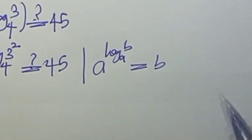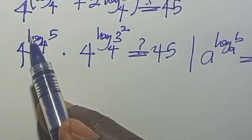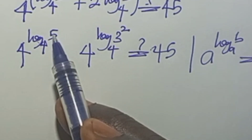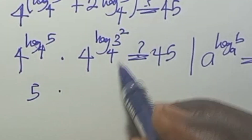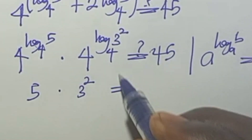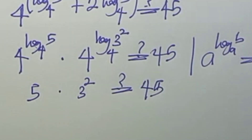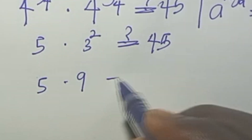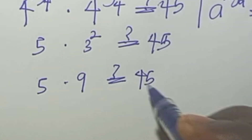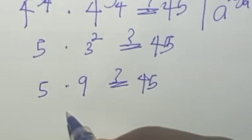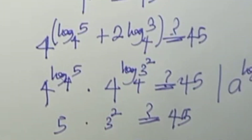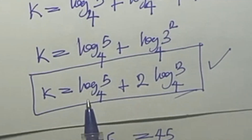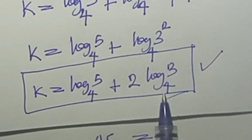Using the identity a to the power of log b base a equals b, we get 4 to the power of log 5 base 4 equals 5, and 4 to the power of log 3 squared base 4 equals 3 squared equals 9. So 5 times 9 equals 45, confirming the result. The value of k as log 5 base 4 plus 2 log 3 base 4 is correct.